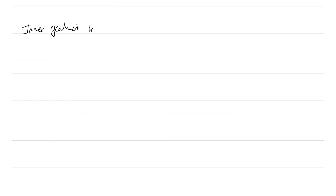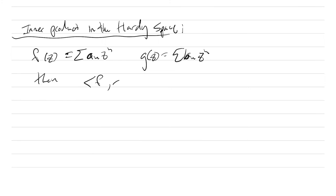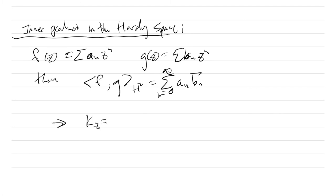For the Hardy space, if F(Z) = sum of a_n Z^n and G(Z) = sum of b_n Z^n, then the inner product of F with G in H2 equals the sum of a_n times b_n-bar, from n=0 to infinity. This leads to a kernel function where K_Z equals 1 over (1 minus Z₀-bar times Z). This is called the Szegő kernel, and it will be a reproducing kernel for the space.